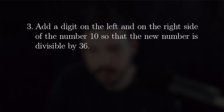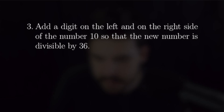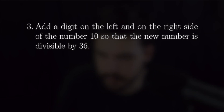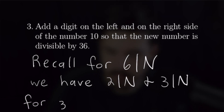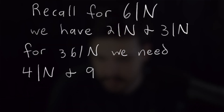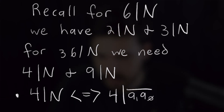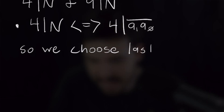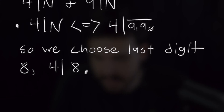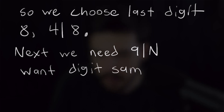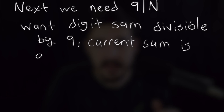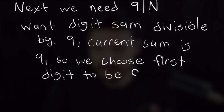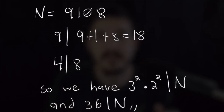For problem three, we need to add a digit on the left and right side of the number 10 so that the new number is divisible by 36. Since 36 = 4 × 9, we need 4 to divide n and 9 to divide n. For 4 to divide n, 4 must divide the last two digits — with 0 already there, we choose 8 as the last digit. With 8 appended, the digit sum is 9, so we choose 9 as the leading digit, giving us 9108, which is divisible by 36.